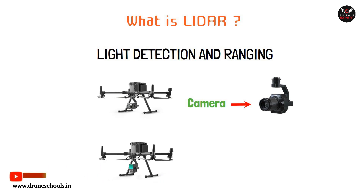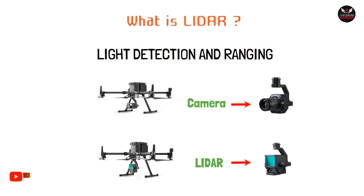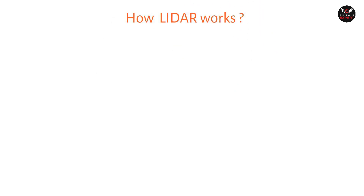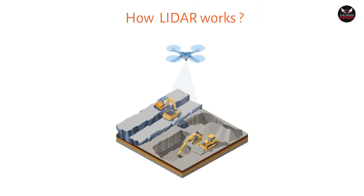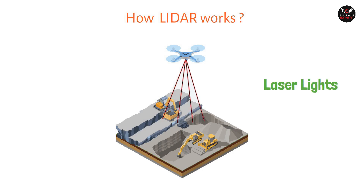The key difference between a LiDAR drone and a normal drone lies in the payload. A normal drone uses a camera, whereas a LiDAR drone uses a LiDAR sensor. The LiDAR sensor emits multiple laser lights which reflect off surfaces and return to the sensor. By measuring the time difference, the distance to the object is calculated.